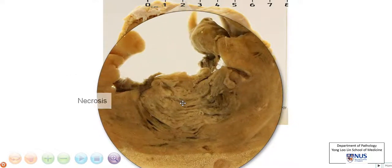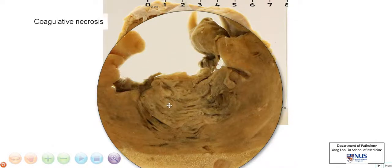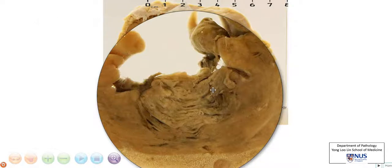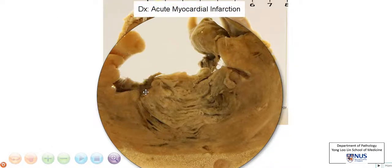Microscopically, we would see coagulative necrosis, which is the residual presence of cellular outlines but with loss of nuclei. So the diagnosis in this case is myocardial infarction.